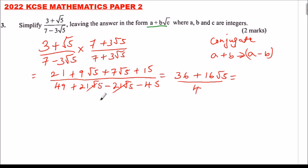We can simplify, we divide 36 by 4. 36 divided by 4, plus 16 divided by 4, √5. This is going to give us 9, this is going to give us 4. So this equals 9 + 4√5.